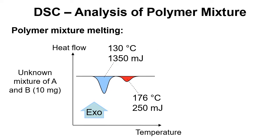Here's a mixture that's been analyzed — an unknown mixture of A and B, 10 milligrams in total. We get a total area of 1350 millijoules for polymer A — we know it's A because it melted at 130 degrees — and 250 millijoules for polymer B, which we know is B because it melted at 176 degrees C.